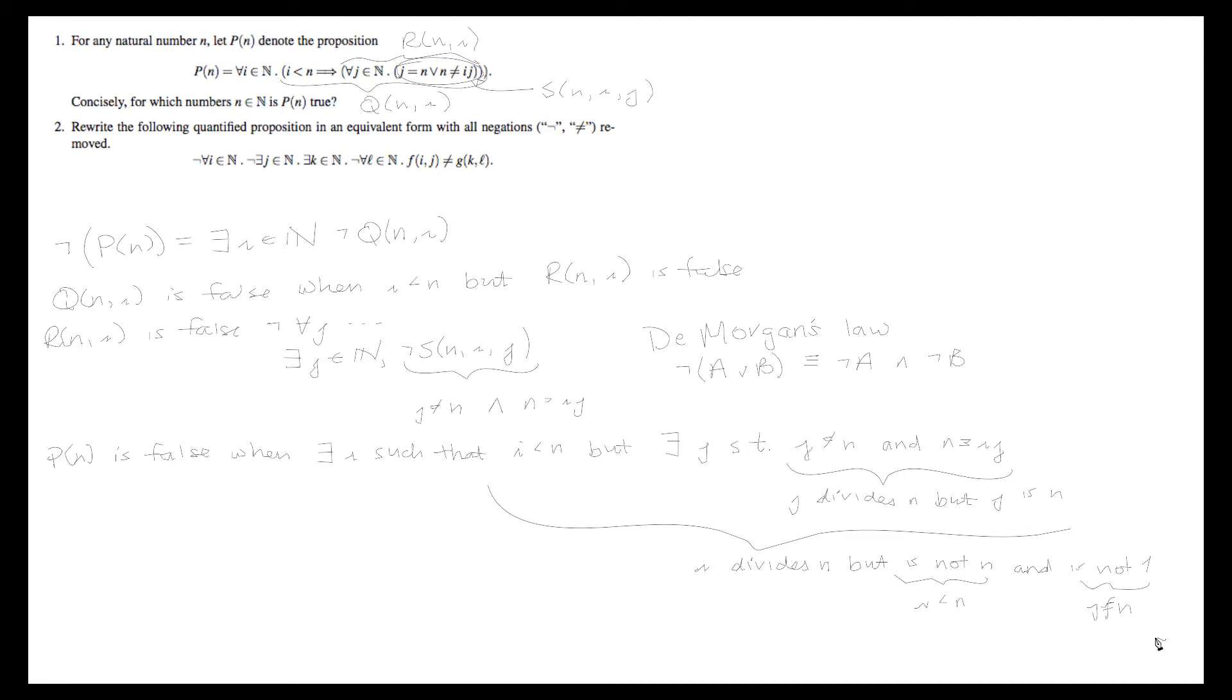So p of n is false when there exists an i and a j such that i and j divide n and are not 1 and not n, which means that p will be true for prime numbers, since they do not have any divisor except 1 and themselves. It's also true for n equals 1 because we restrict that i is less than n, 0 does not divide 1, and so the proposition actually only has one case. And also for n equals 0 since it's just vacuously true because we can't find a natural number less than 0. So to recap, p of n is true for prime numbers, also for n equals 0 and n equals 1.